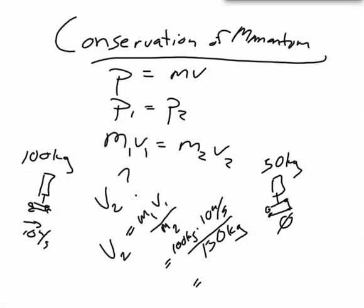That's going to be 100 kilograms times 10 meters per second, divided by the mass of the cars afterwards, which is 150. So 1,000 divided by 150, that's going to be what? 6 something? 6 meters per second.